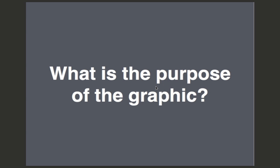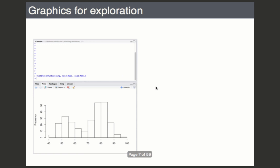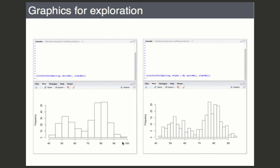The second question is: what is the purpose of the graphic? You might use data graphics in the exploratory phase of your analysis. For example, I'm looking at a histogram of the Old Faithful geyser eruptions dataset. I run the histogram, it looks like this, and I decide I want to look at it in more detail with a smaller bin size. I tweak a parameter and run hist again with a greater number of breaks, and by tweaking these parameters during exploration you might be able to learn something new about the data.